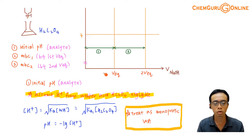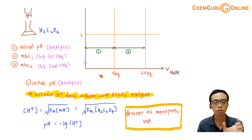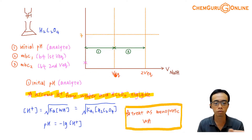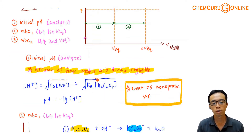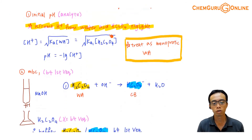The next thing that we want to talk about will be the second point. We want to show this region here from zero to VEQ. During reaction number 1, we have a buffer. So therefore we can calculate the maximum buffering capacity.